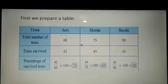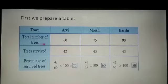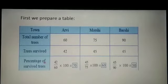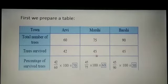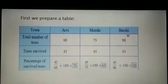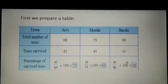First we prepare a table. Towns: R.V., Morshi, and Barsi. In R.V., planted trees are 60, survived is 42, so percentage of survived trees = 42 upon 60 into 100 = 70%. In Morshi, total trees 75, survived 45, so 45 upon 75 into 100 = 60%. In Barsi, total trees 90, survived 45, so 45 upon 90 into 100 = 50%.